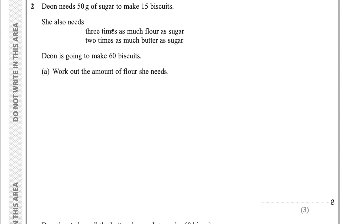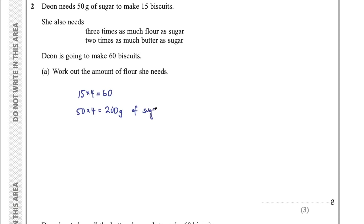Question 2 says Dion needs 50 grams of sugar to make 15 biscuits. She also needs 3 times as much flour as sugar and 2 times as much butter as sugar. Dion is going to make 60 biscuits — work out the amount of flour she needs. Since 15 multiplied by 4 is 60, we multiply the sugar by 4: 50 times 4 is 200 grams of sugar. Then 3 times as much flour means 200 times 3, which is 600 grams of flour.